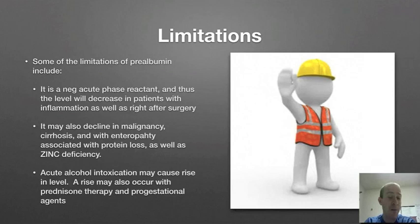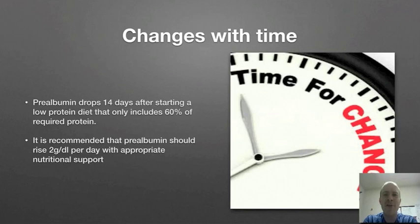So how does it change with time? Prealbumin drops after about 14 days on a low protein diet that only provides about 60% of required protein. It's actually recommended that prealbumin should rise about 2 grams per deciliter per day with appropriate nutritional support.